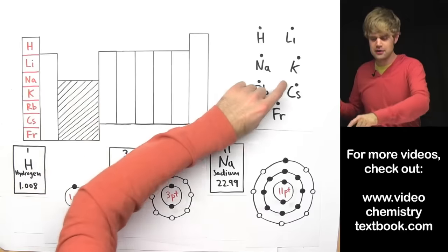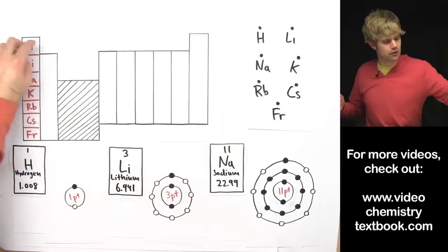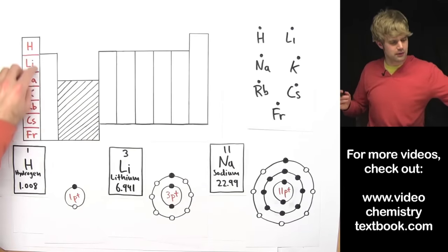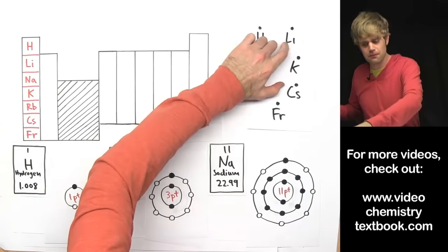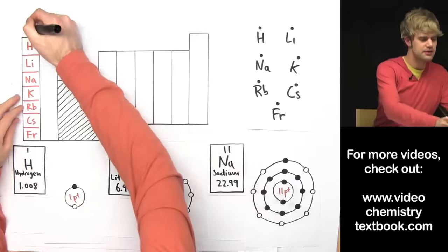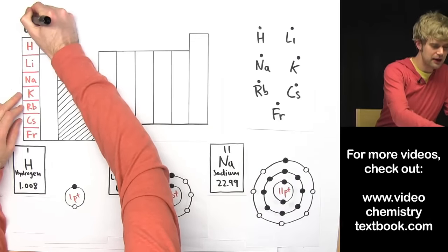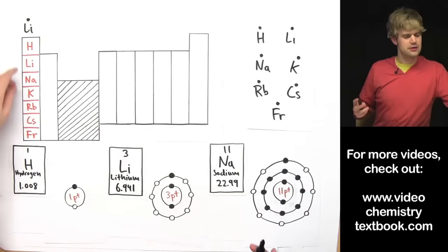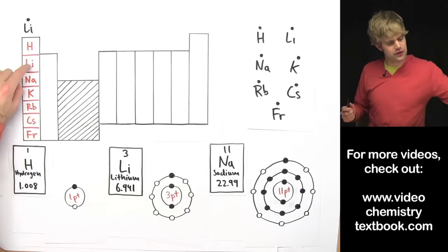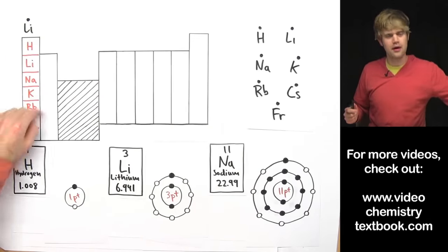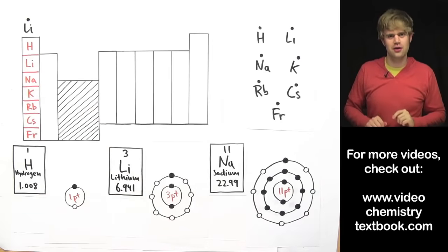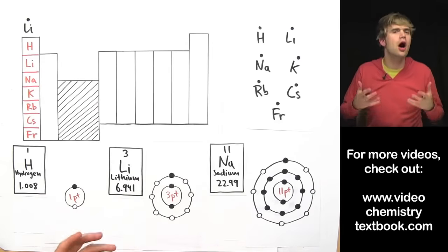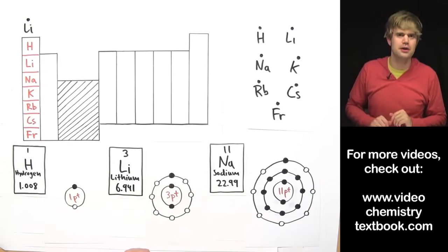There's a way we want to write that to show these elements have one valence electron — we draw what are called electron dot diagrams, or Lewis diagrams. We take the element symbol and put one dot over it to show one valence electron. Here's how we'd write the electron dot diagrams for all the elements in this column — using lithium as an example. Every single atom in this column has one valence electron.